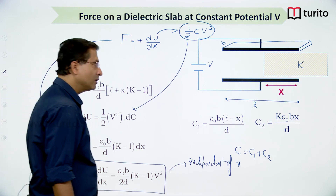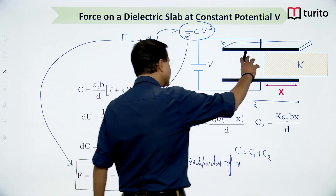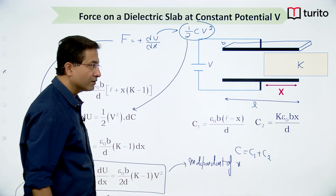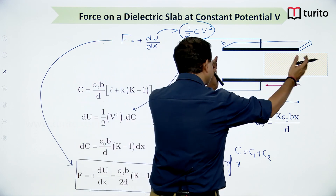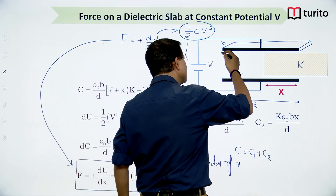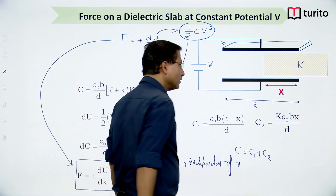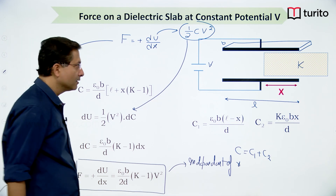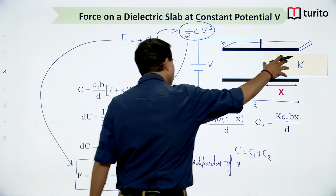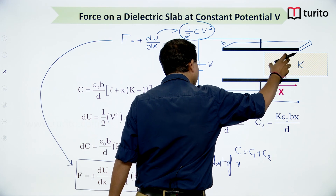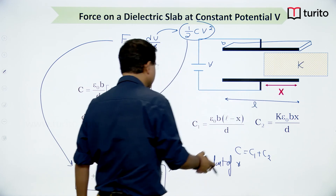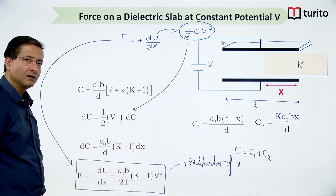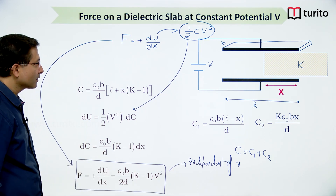This formula applies only when the dielectric is partially filling the gap between the plates. If it is completely inside, the fringe effect force from both sides cancels out. So if it is partially filled — some part inside and some part outside — the force experienced when the battery remains connected is independent of x, that is, a constant force.